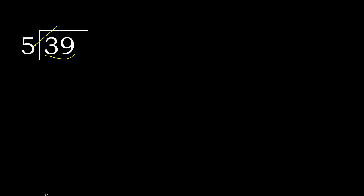5 — multiply by which number is nearest to 39 but not greater. 5 multiplied by 8 is 40; 40 is greater. 5 multiplied by 7 is 35; 35 is not greater. 39 minus 35 is 4.